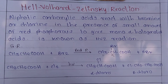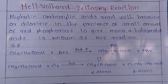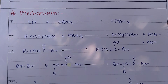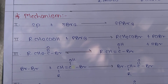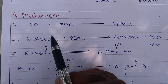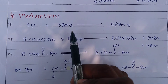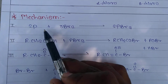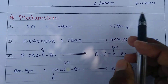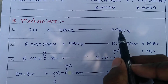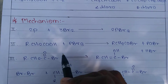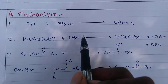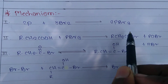Let's discuss the mechanism of the Hell-Volhard-Zelinski reaction. First, red phosphorus and halogen form phosphorus trihalide: P + 3 Br₂ gives 2 PBr₃, that is, phosphorus trihalide. This phosphorus trihalide further reacts with the acid to give an acid bromide.